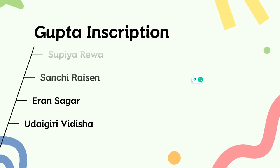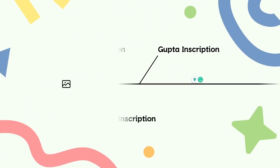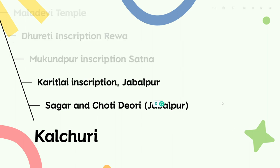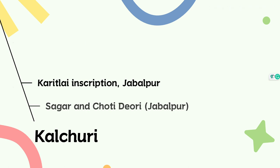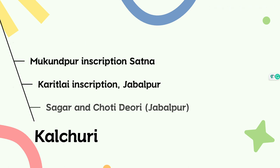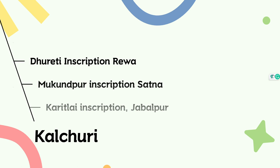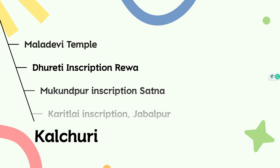The next important dynasty is the Kalachuri dynasty. For this dynasty there are also some sources. There is a small inscription in Jabalpur — a scripture-filled inscription — and then another inscription can also be found related to Jabalpur. There is also an important temple located, and in this temple there is an important inscription belonging to the Kalachuri dynasty.